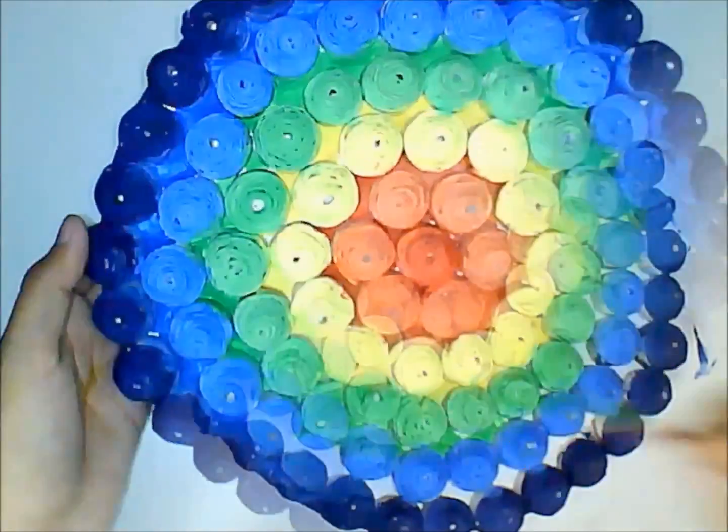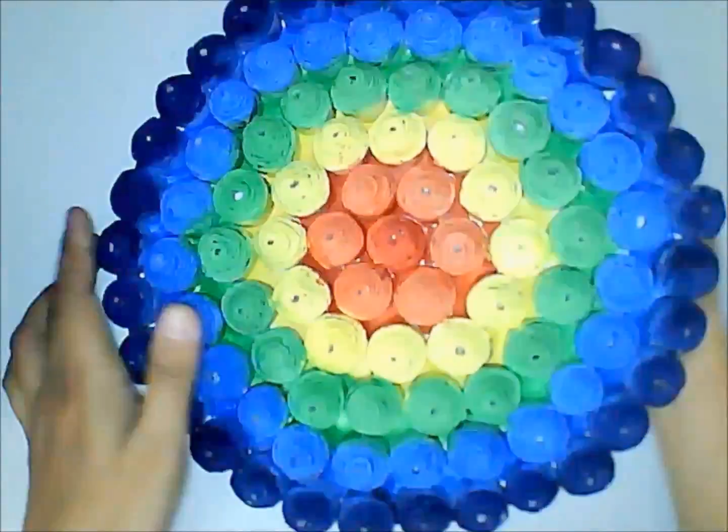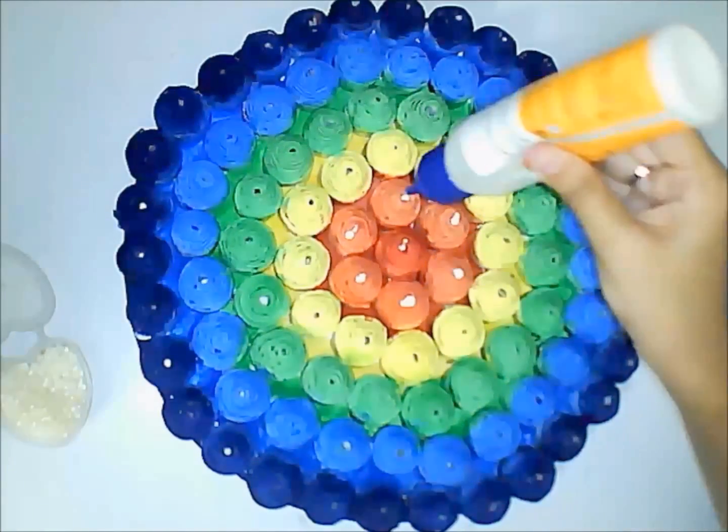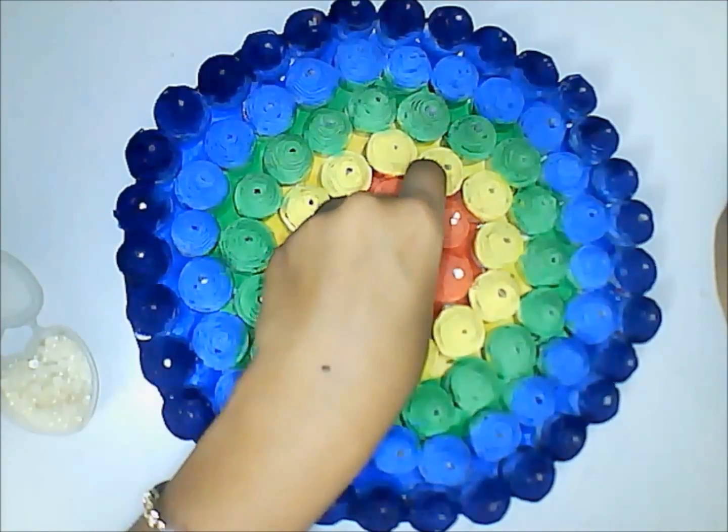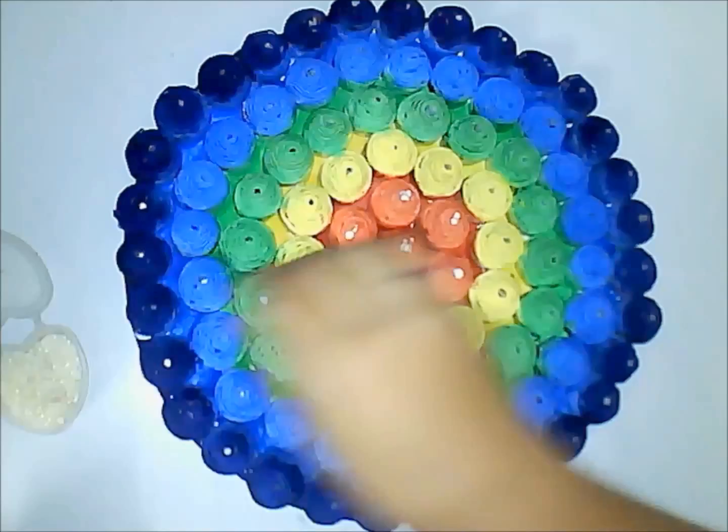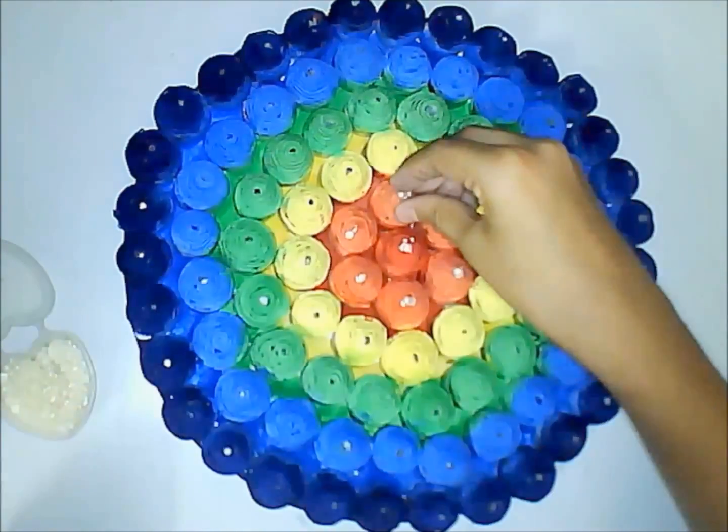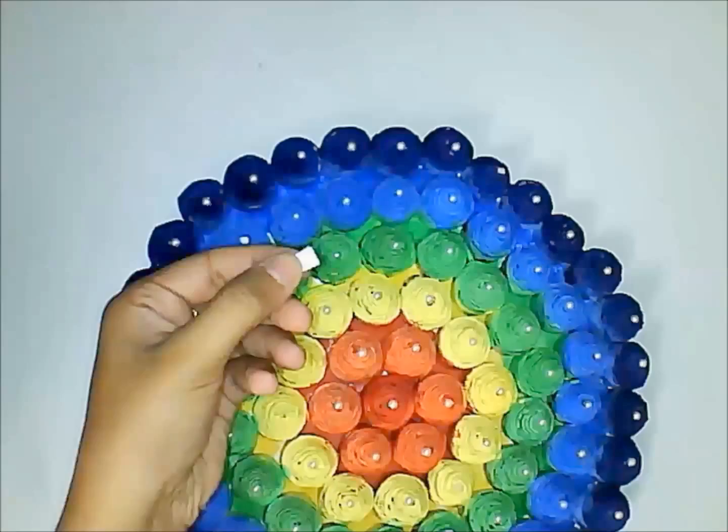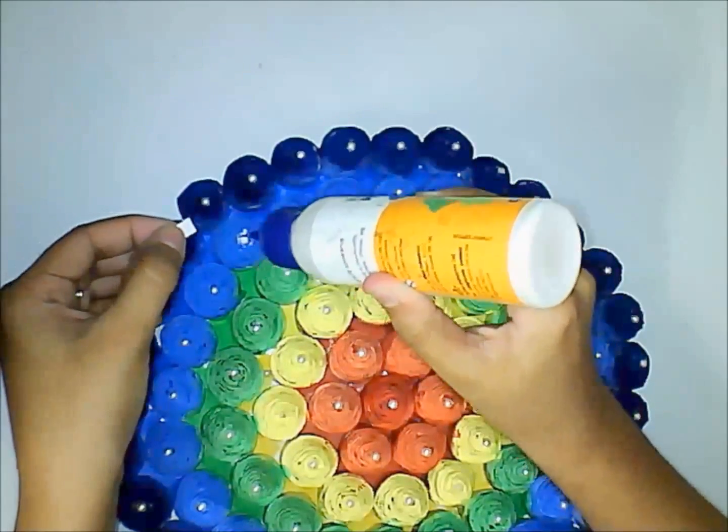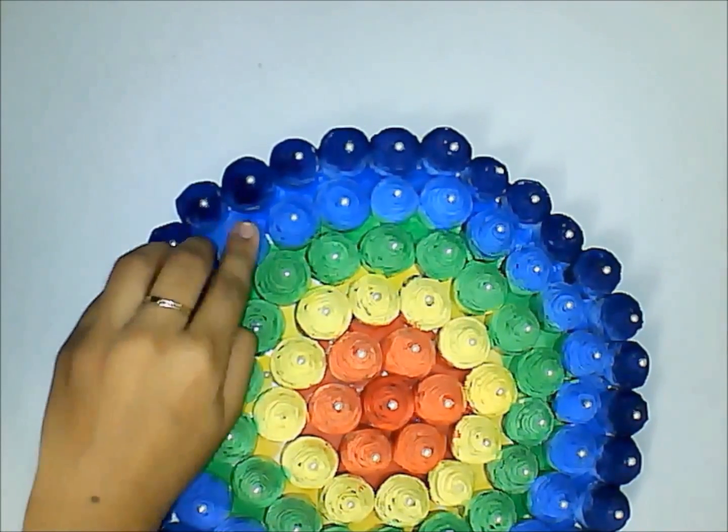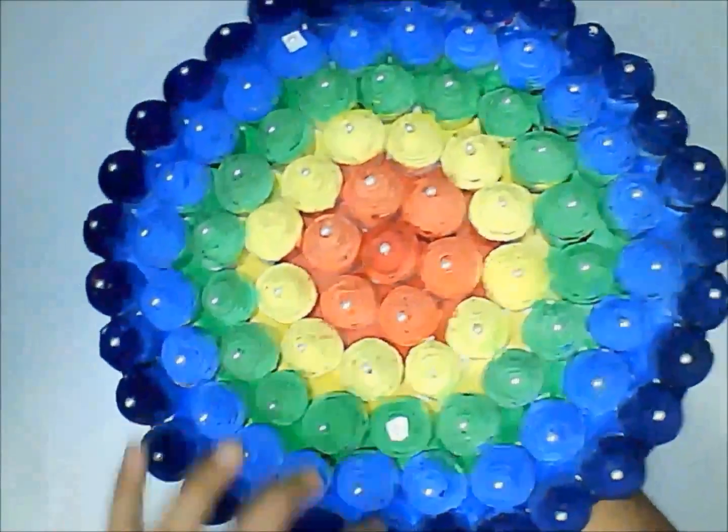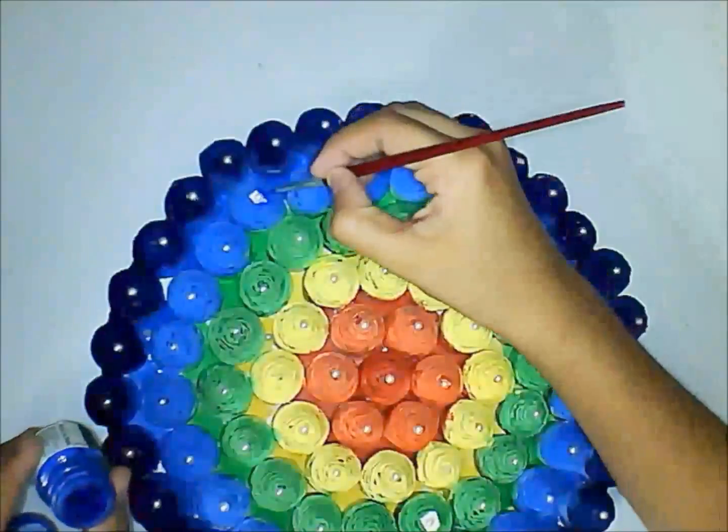Now let us decorate this using white beads. Just take some glue and apply it at the tip of each dome shape and stick the white beads. If you are not able to stick properly some of the beads, you can take a strip of paper, stick it there, and stick the bead above that paper. You can cover up the strip of paper with that corresponding color.